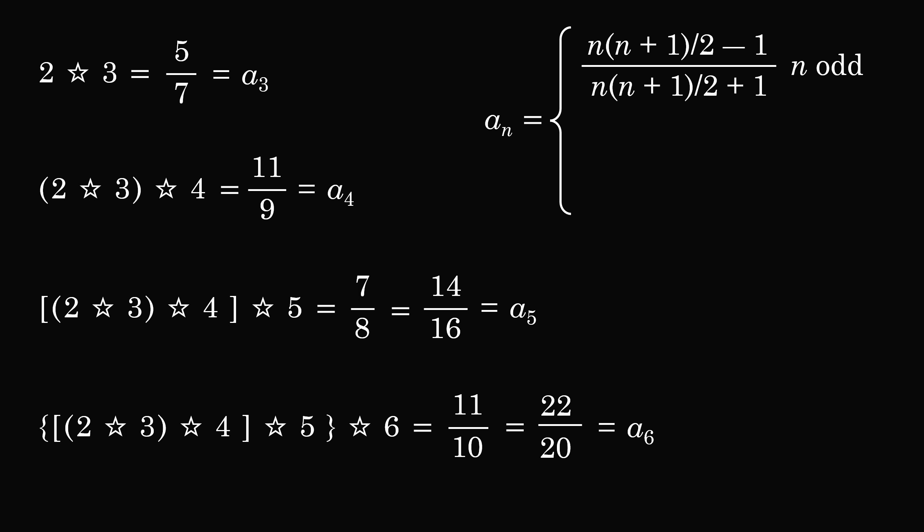And this is for n being an odd number. If we have an even number we'll flip the numerator and denominator. So this holds for all of the examples we've calculated.